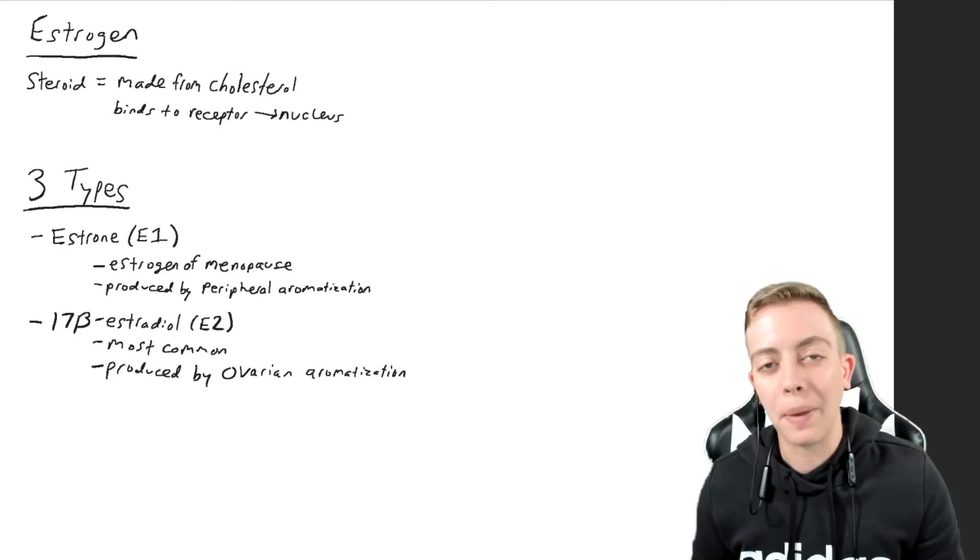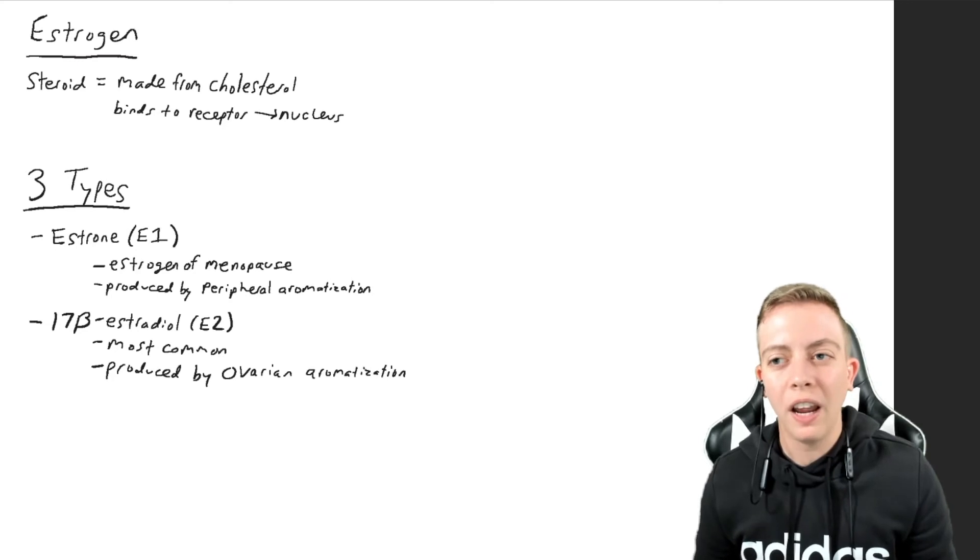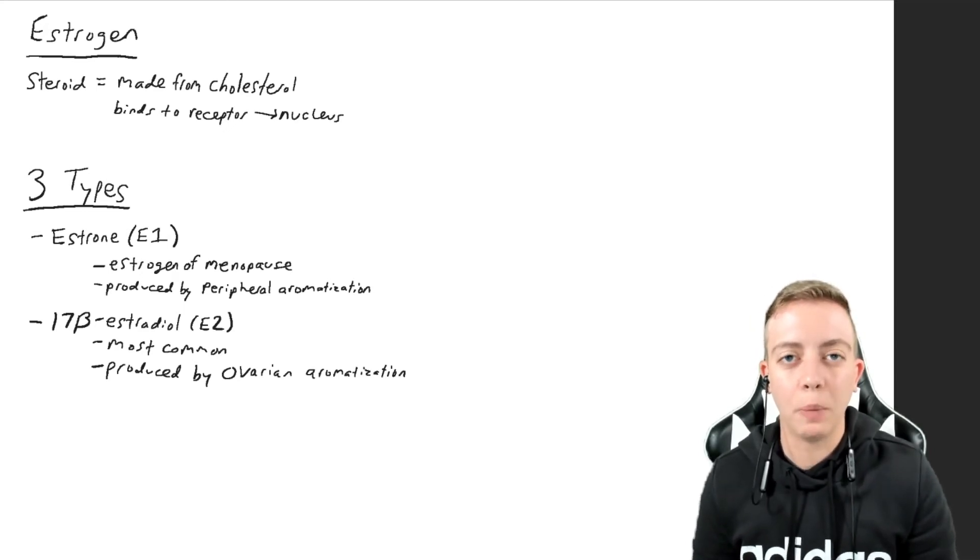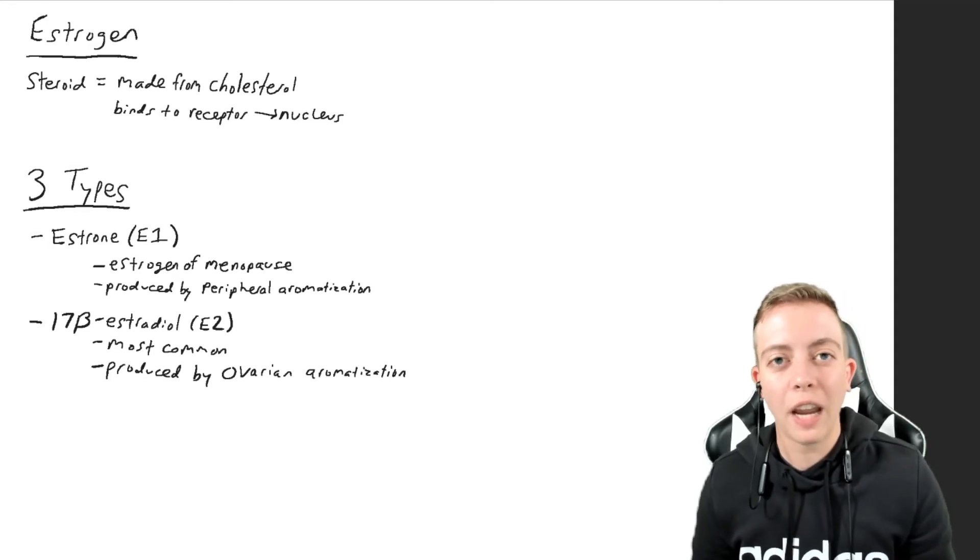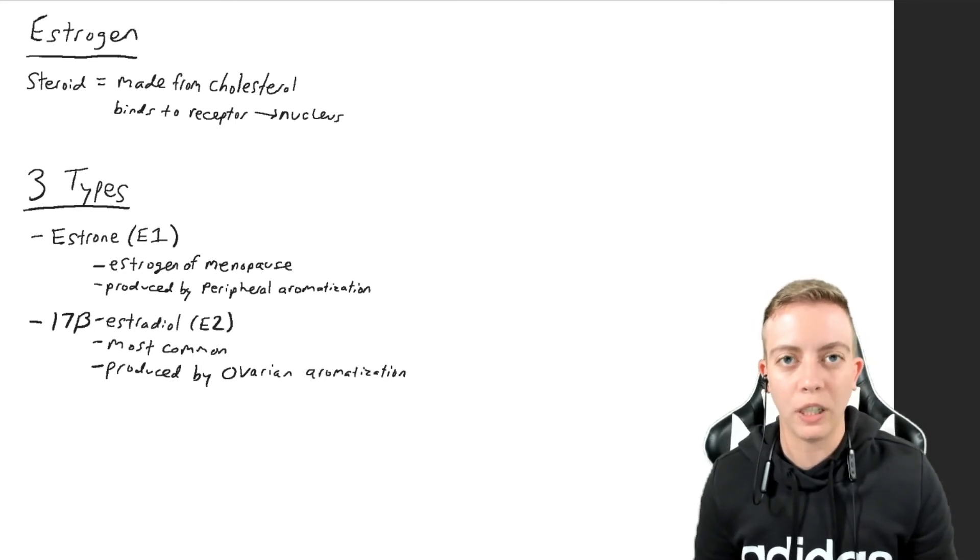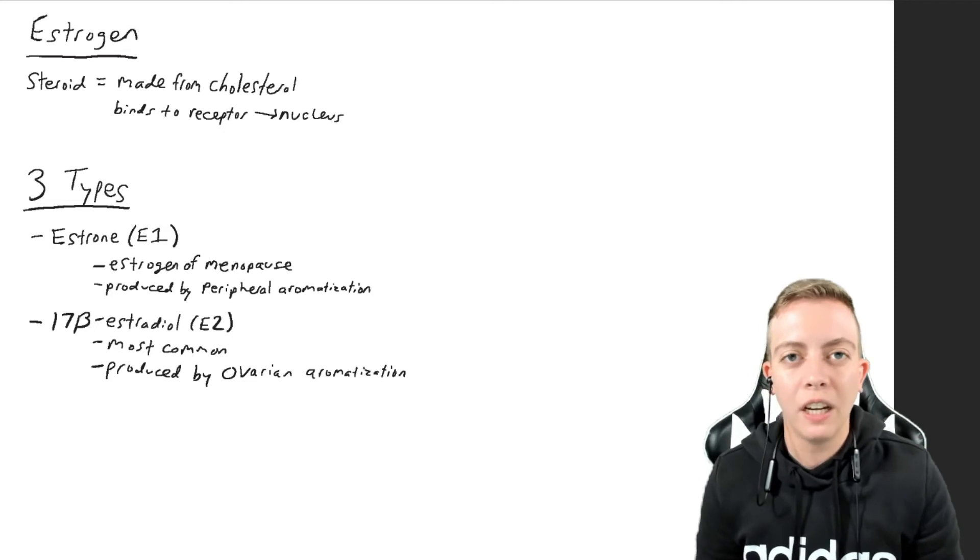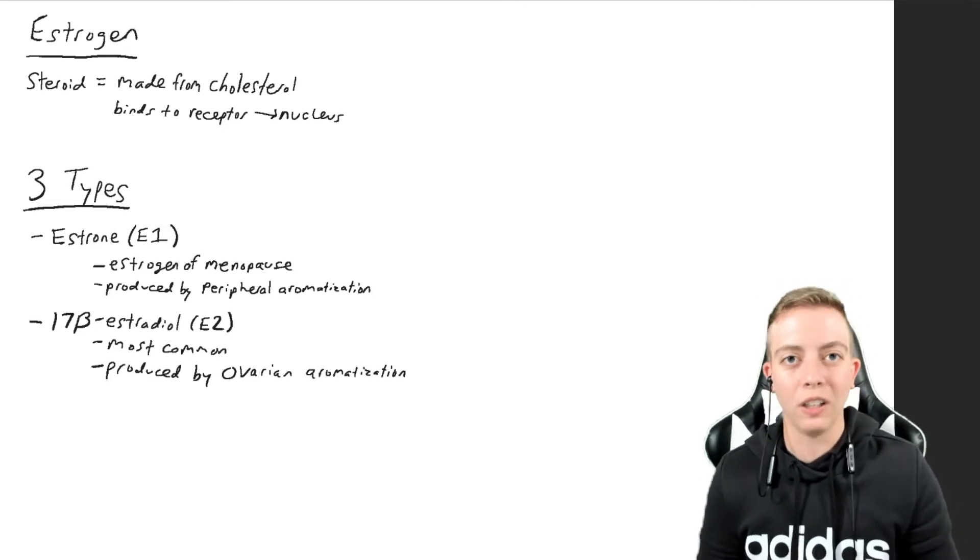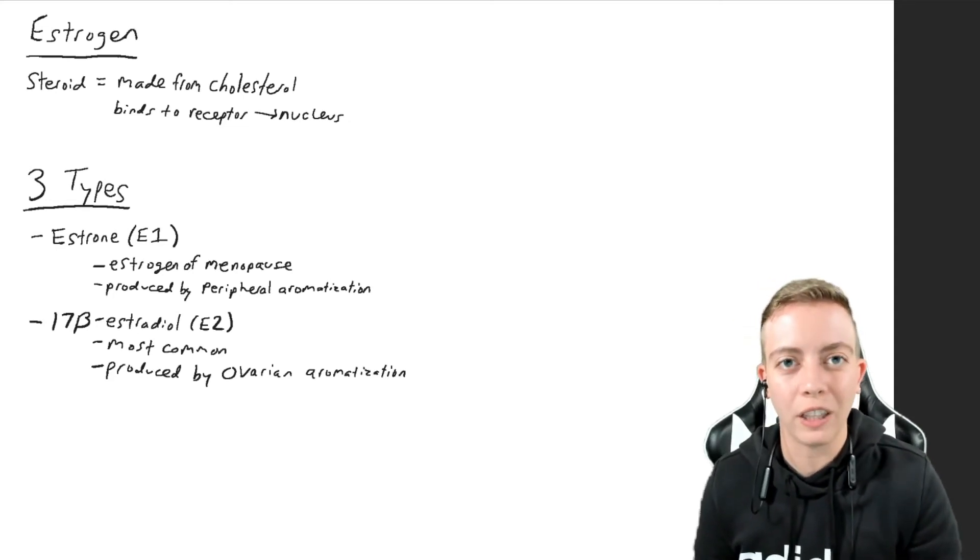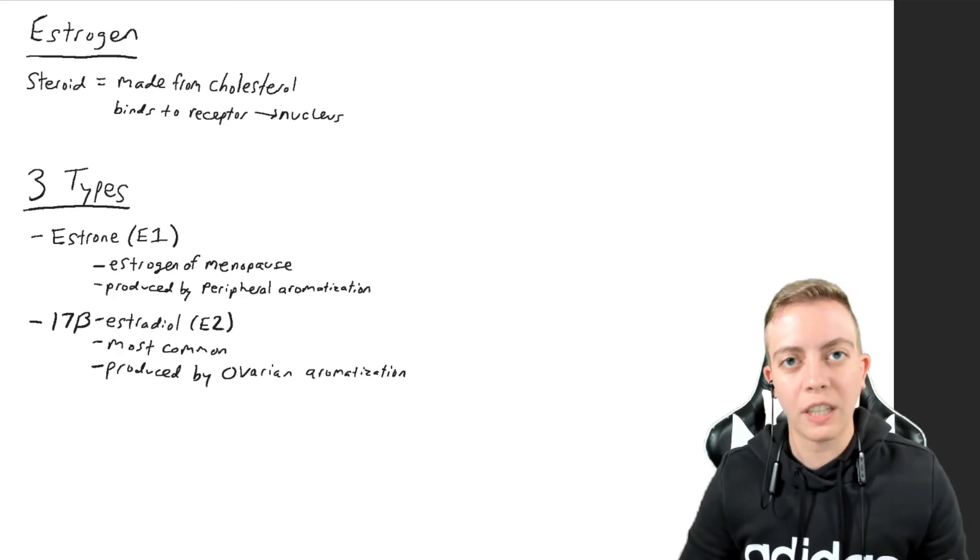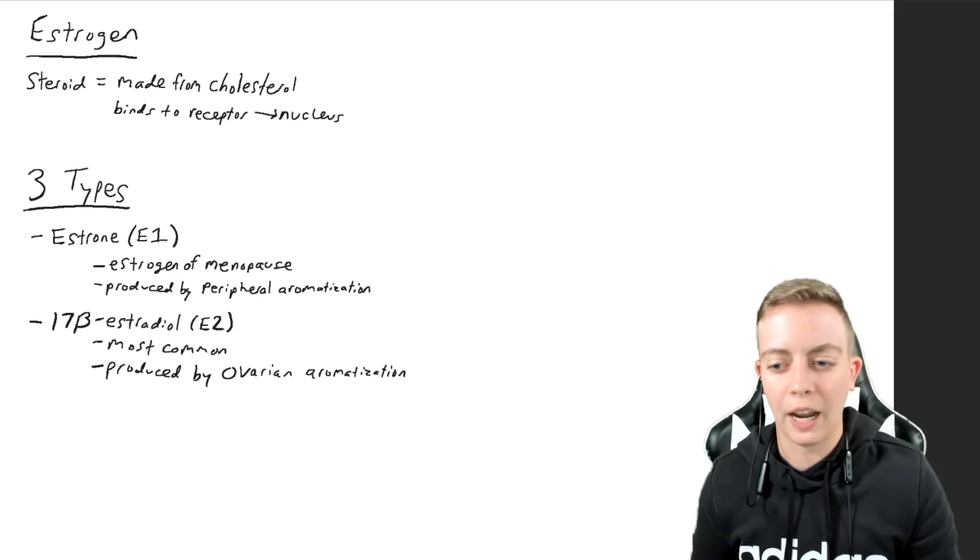The next one is 17-beta estradiol, also known as E2. If you have had any exposure to estrogen or have been taught anything about estrogen, this is probably the estrogen that you are most familiar with because it is the most potent form of estrogen. If you take any HRT that has estrogen in it, it is most likely estradiol. Estradiol is produced by aromatization in the ovaries, specifically the granulosa cells. This converts testosterone, which is produced by the theca cells, into estradiol in the ovaries.